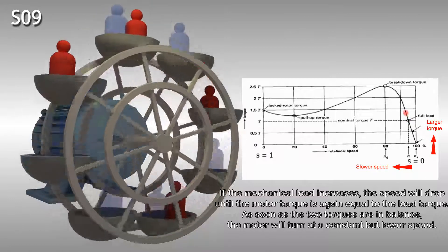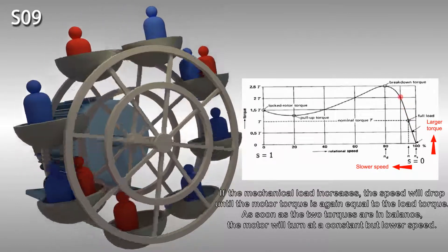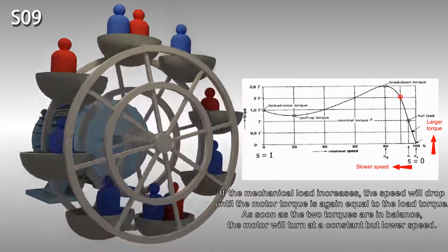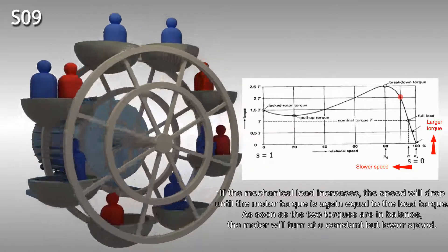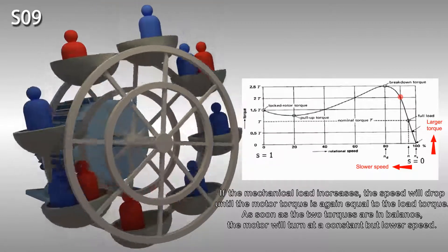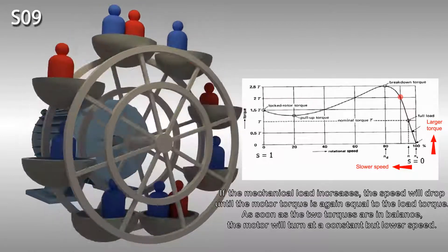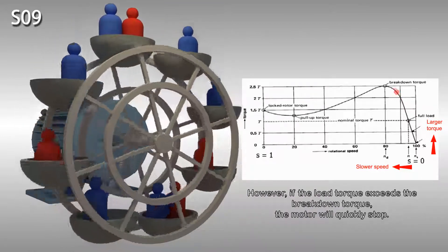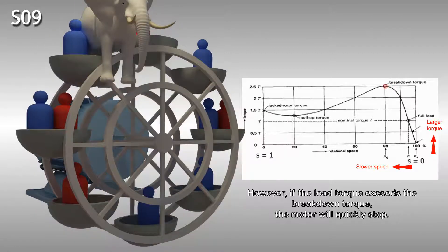If the mechanical load increases, the speed will drop until the motor torque is again equal to the load torque. As soon as the two torques are in balance, the motor will turn at a constant but lower speed. However, if the load torque exceeds the breakdown torque, the motor will quickly stop.